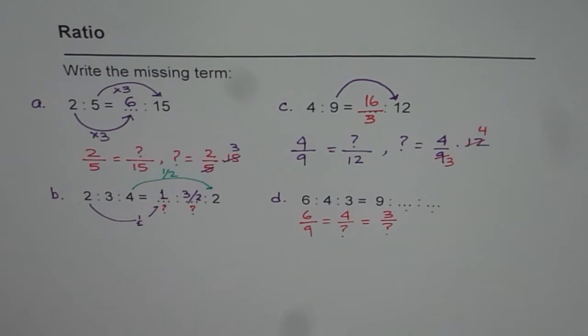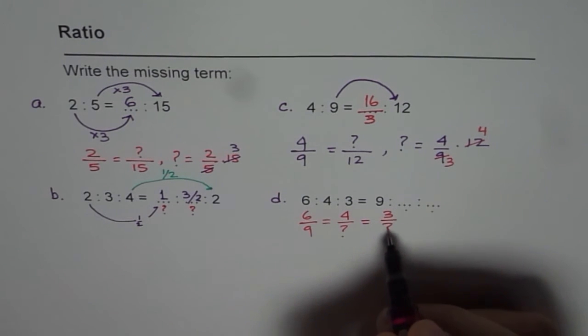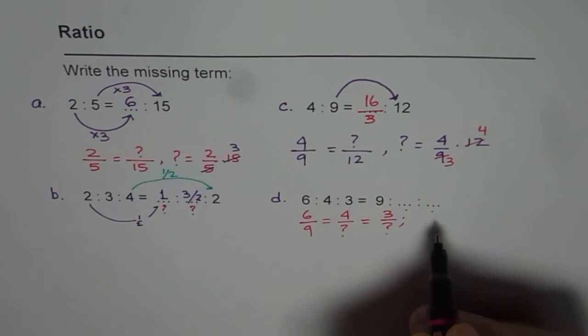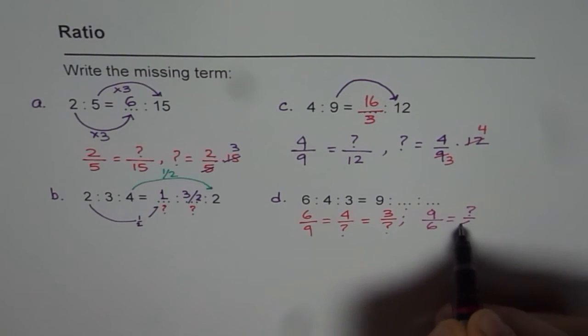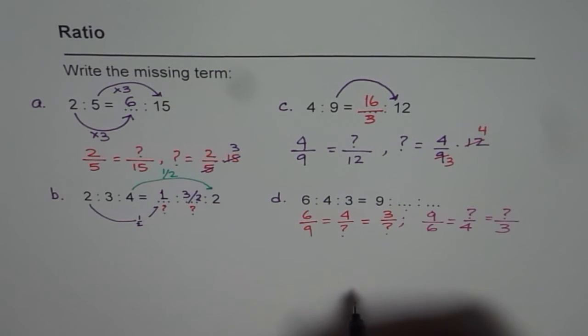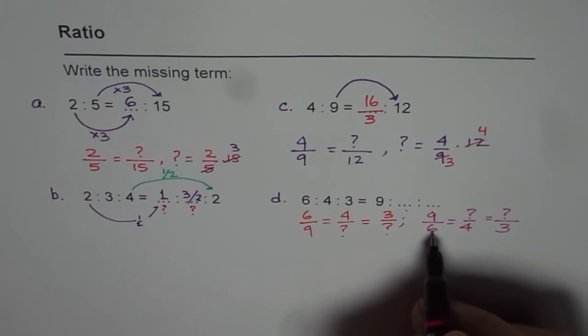So when we cross multiply we do get the answer. That is we could do like this. If I would have written it for example in the other way, because we want to find this, we could also have written this as 9 over 6 equals to something over 4 equals to something over 3. So that becomes easier in this case since we are dealing with a number which is more than 1.